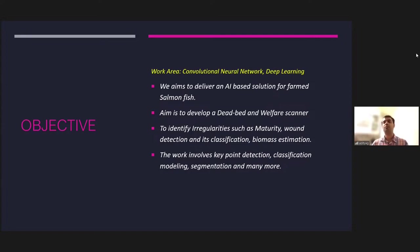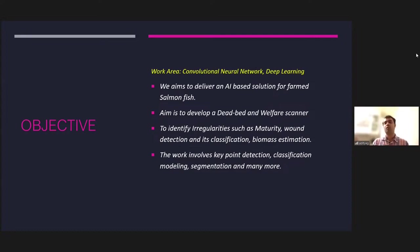While the dead pet scanner addresses fish after death, the more important goal is to prevent fish from dying by detecting diseases early. This leads to the welfare scanner, which uses 2D and stereo cameras to capture images of farmed salmon, identify inequalities, and monitor the environment for growth conditions. From a technology perspective, the tasks include keypoint detection, classification, segmentation, and more.